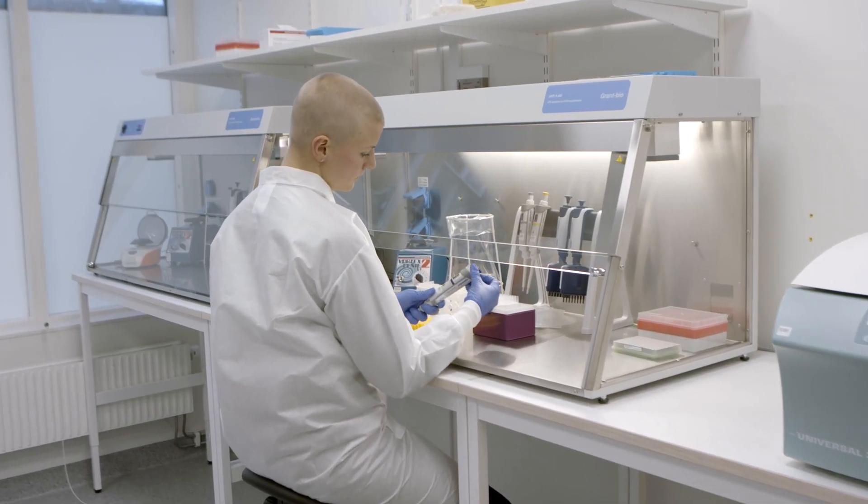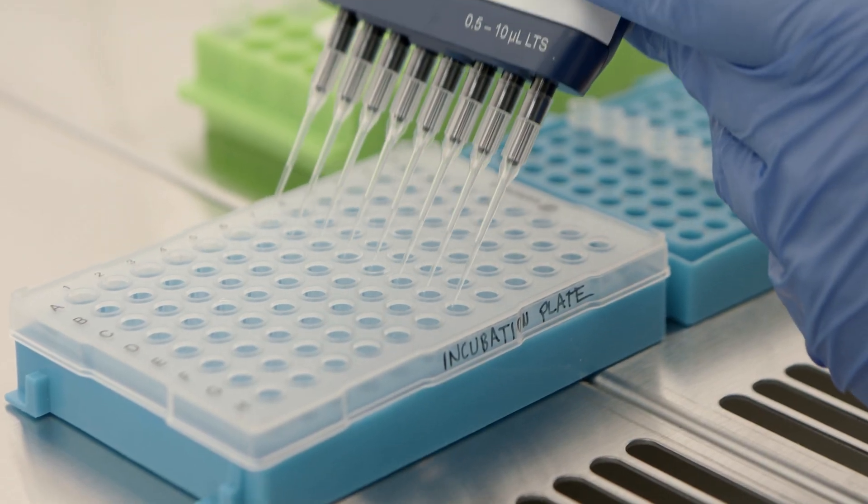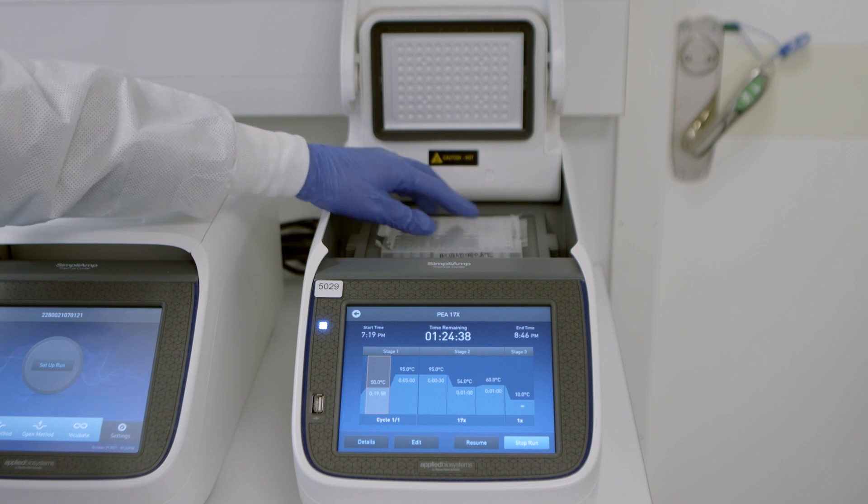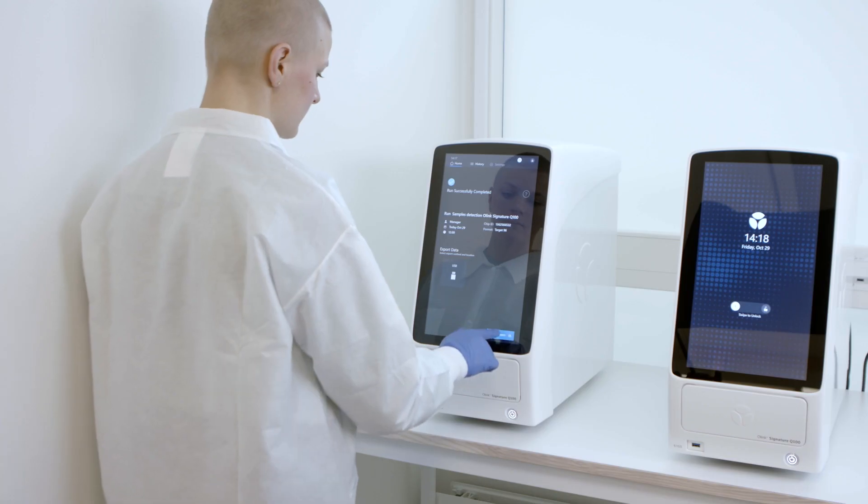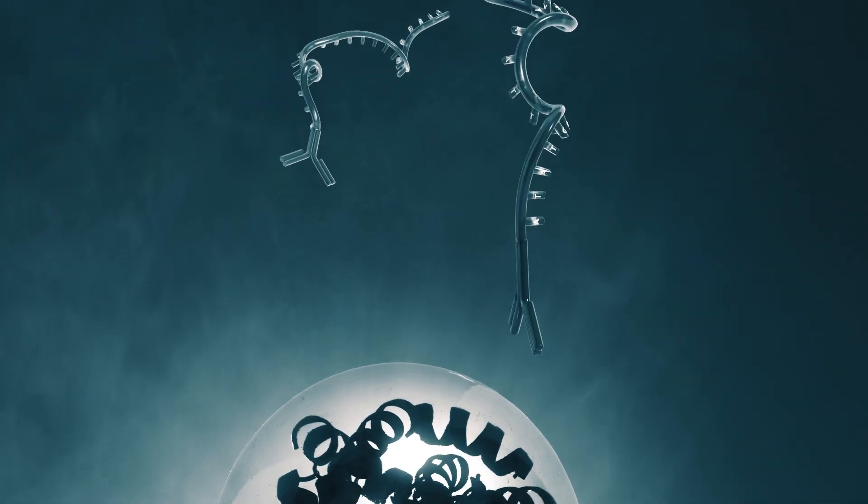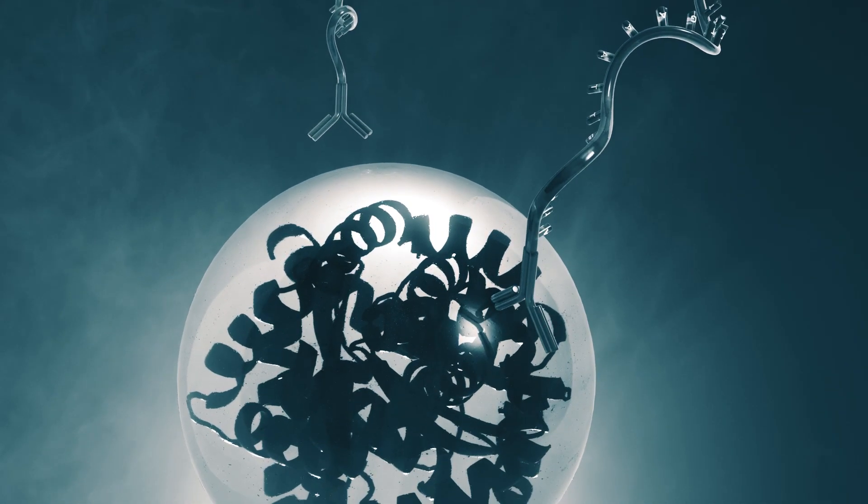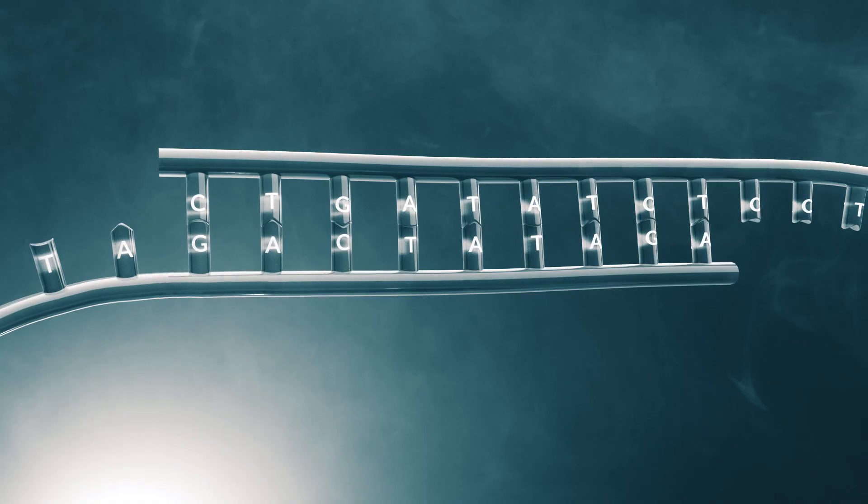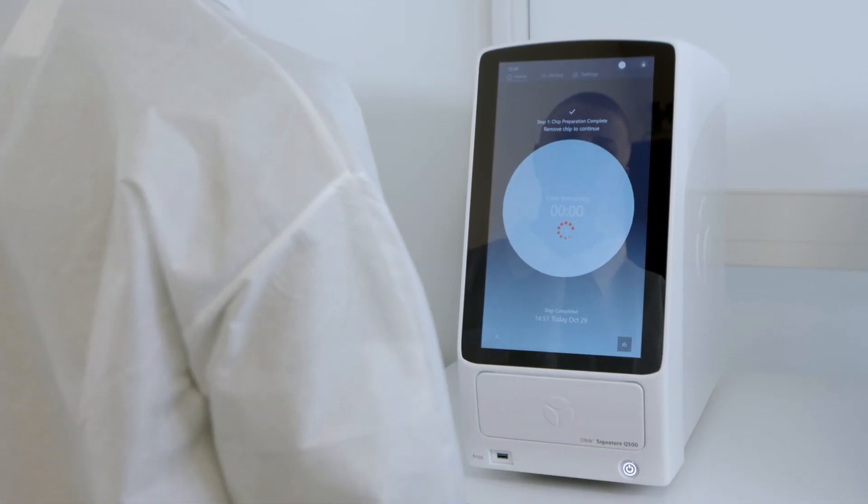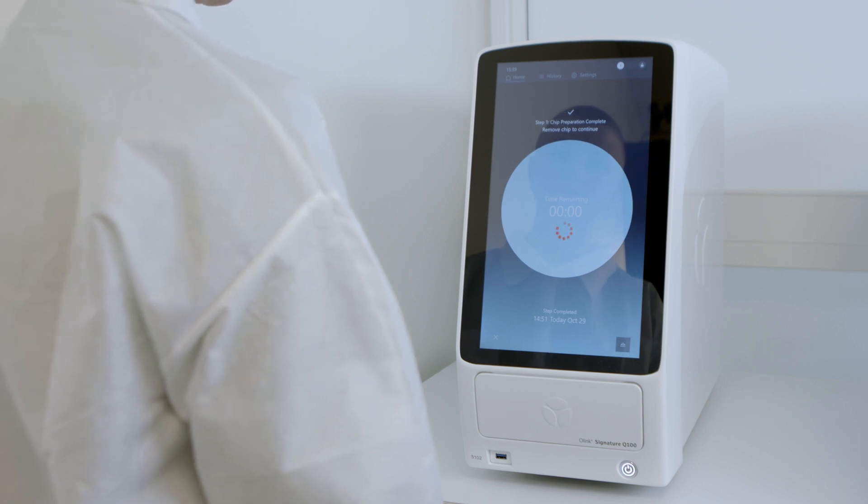The O-Link target protocol consists of three core steps: the incubation step, the extension and amplification step, and the detection step. The target workflow takes place over two days, where on day one, samples undergo an immunoreaction. And on day two, samples are prepared for amplification and detection using qPCR.